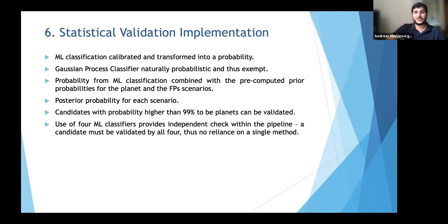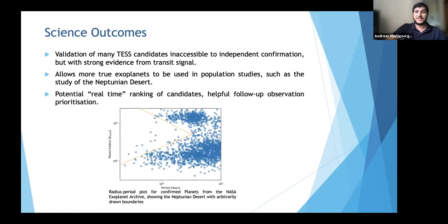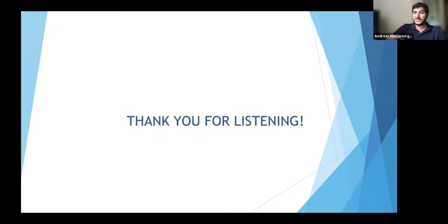Expected science outcomes include validation of many TESS candidates inaccessible to independent confirmation but with strong transit signal evidence, enabling their use in population studies such as the study of the Neptunian desert. The pipeline also allows real-time ranking of candidates — giving each a score indicating likelihood of being a planet — which should be very helpful in arranging follow-up observations and prioritization. Thank you for listening.